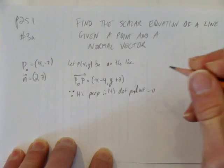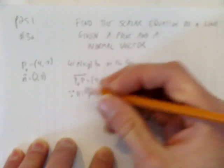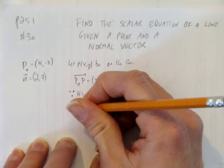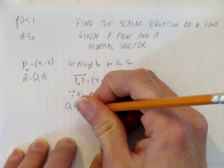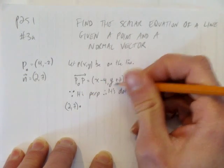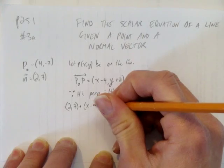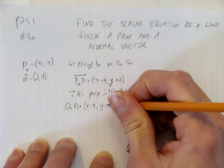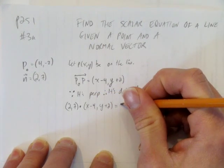if we take the dot product of the normal vector (2, 7) and dot product with this, we should get 0.